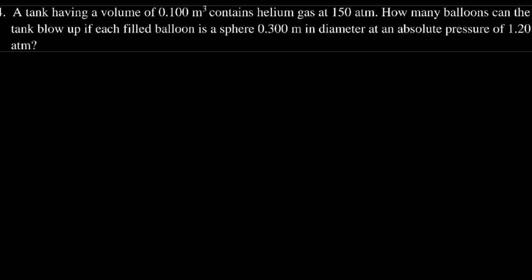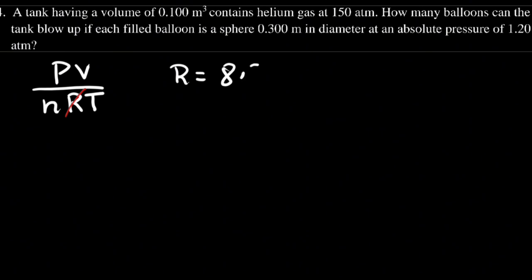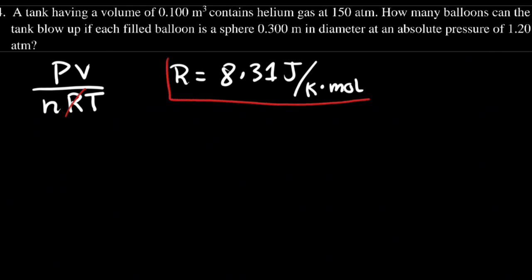In today's video, we will deal with the ideal gas laws and the kinetic theory of gases. We have here the ideal gas equation, where R is always constant with a value of 8.31 Joules per Kelvin multiplied by mole. This is the universal gas constant.